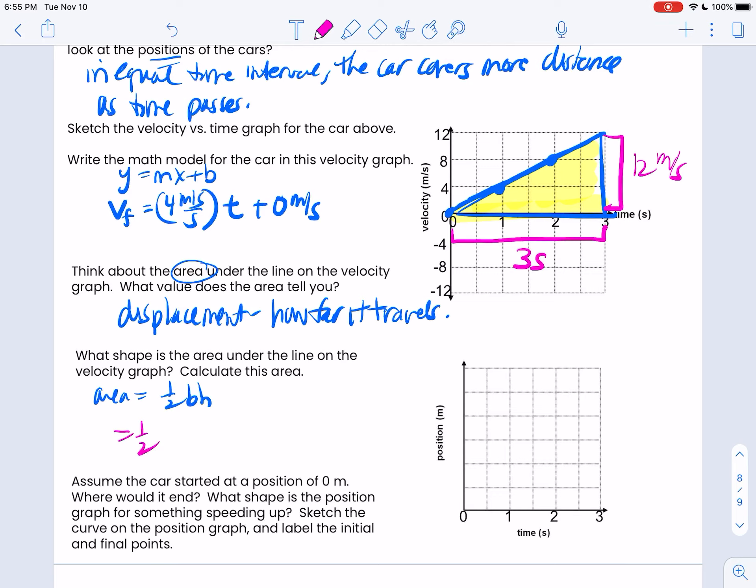So the base of my triangle is three seconds, and the height of my triangle is 12 meters per second. So it's going to be one half three seconds times 12 meters per second. See, that still cancels. So then I get 18 meters. So this displacement in here is 18 meters.